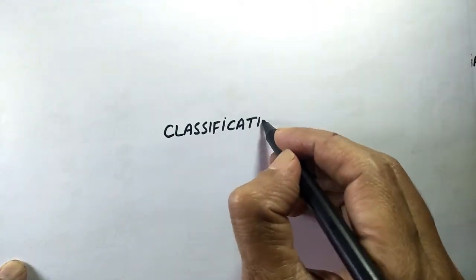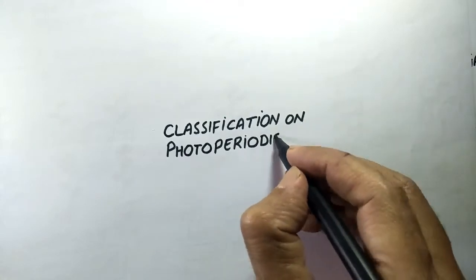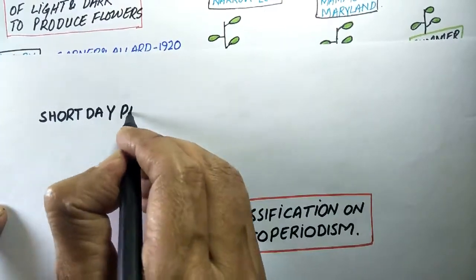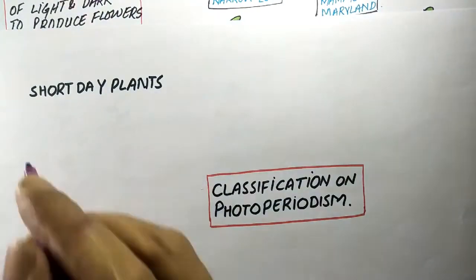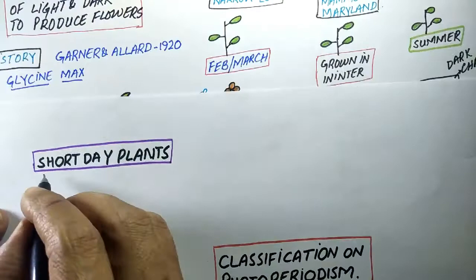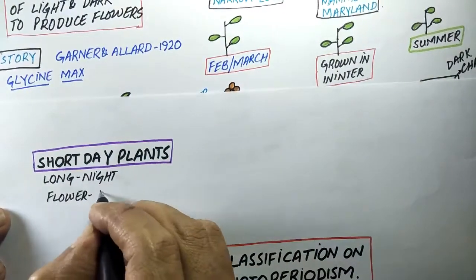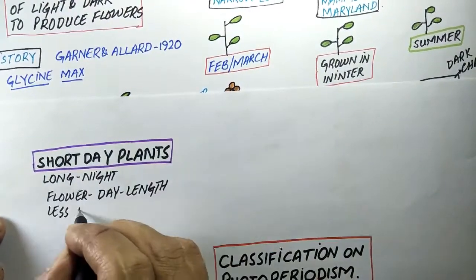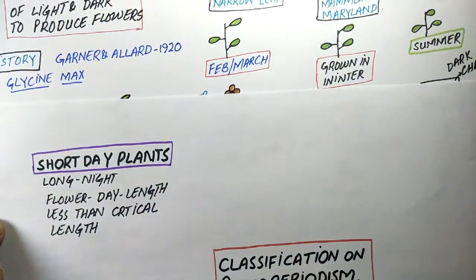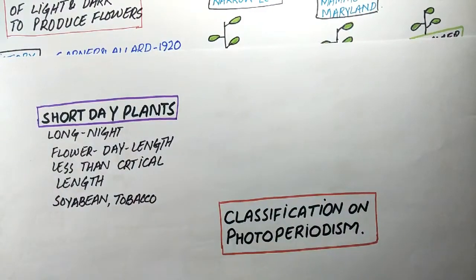The plants are classified into the following types on the basis of photoperiodism. Short Day Plants are plants which flower when the day length is less than a certain critical length. The critical length varies from species to species. They are also called long night plants, such as tobacco, cocklebur, and soybean.